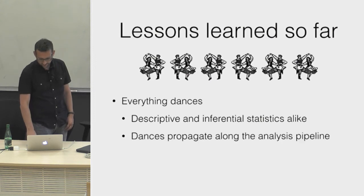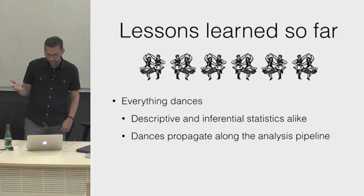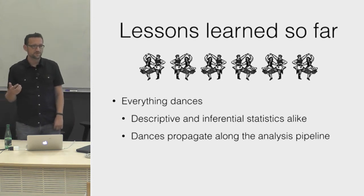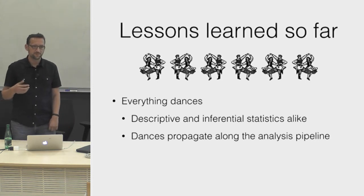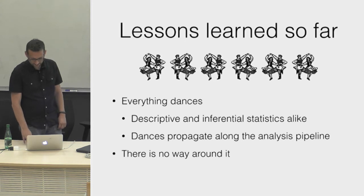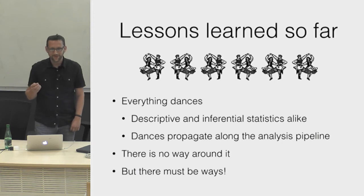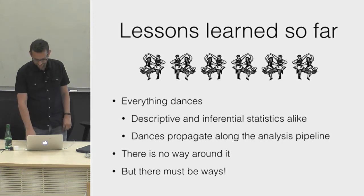What we learned is that everything dances — not only descriptive statistics like sample means, but also inferential statistics, all of them. Errors propagate into your paper, and you can even imagine a dance of papers that cite your paper. There is no way around it, or at least no easy way, and that will be the second part of my talk.